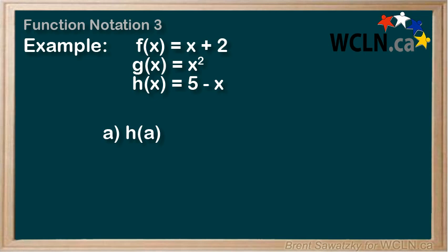That is, the h tells us that we're interested in the third function here. So let's lay that out and wait for the variable. The a in the brackets tells us that we replace our variable with a. So we'd have h(a) = 5 - a.